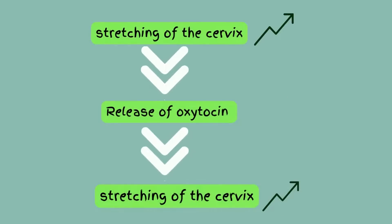Now, why is it a positive feedback? Simply because the increased stretching of the cervix, which is the stimulus, causes the release of the oxytocin that increases the stretching of the cervix more. Therefore, it strengthens the stimulus.